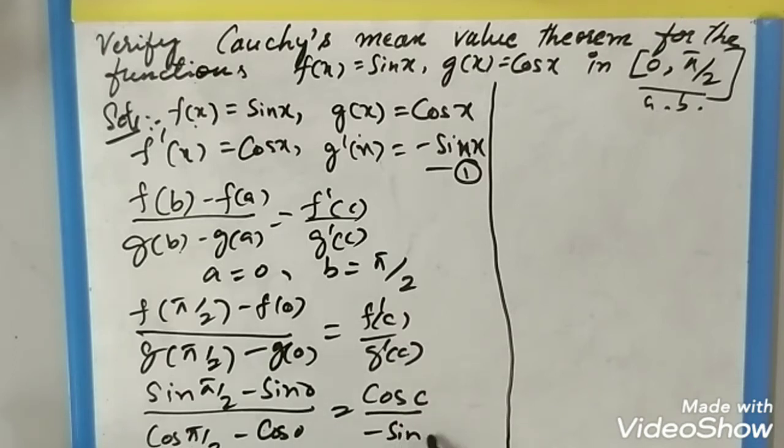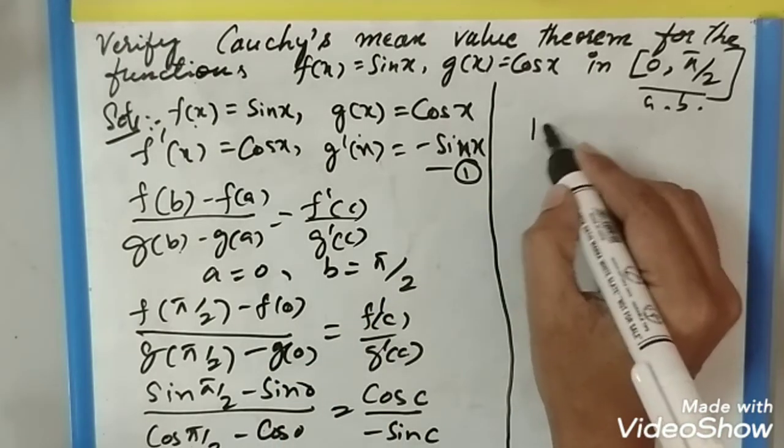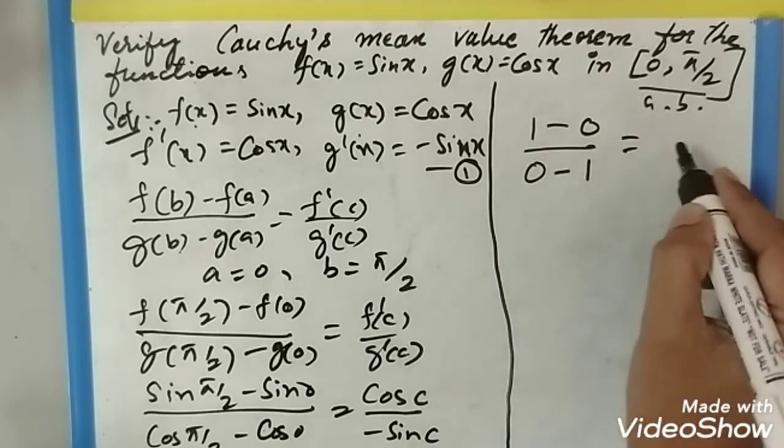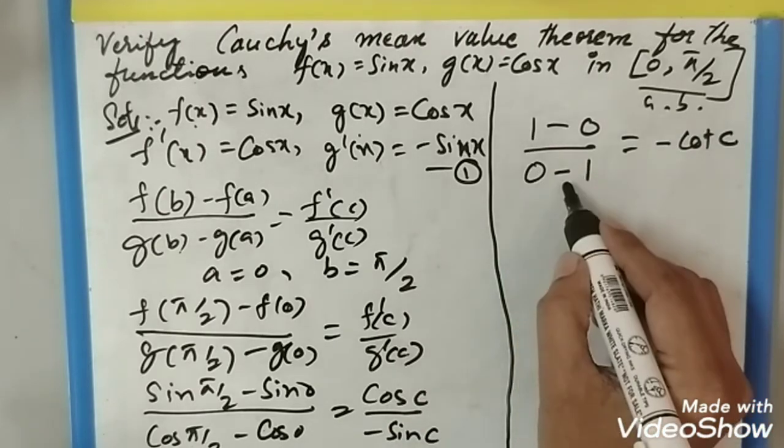Now next step: sin(π/2) is 1, sin(0) is 0, cos(π/2) is 0, cos(0) is 1. cos by sin is cot, so -cot c we get. So 1 divided by -1 is -1.